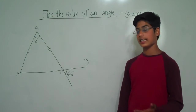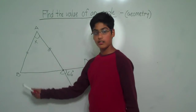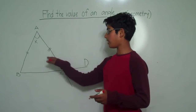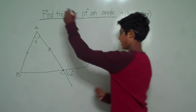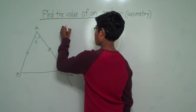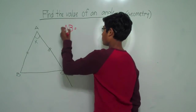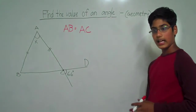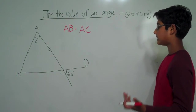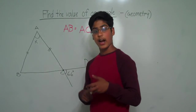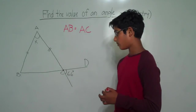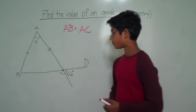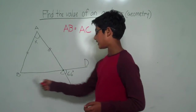We can also see in this triangle that side AB and side AC are of the same length. So let's write that down: side AB is equal to side AC. This means that this triangle is an isosceles triangle. This also means that angle ABC is equal to angle ACB.